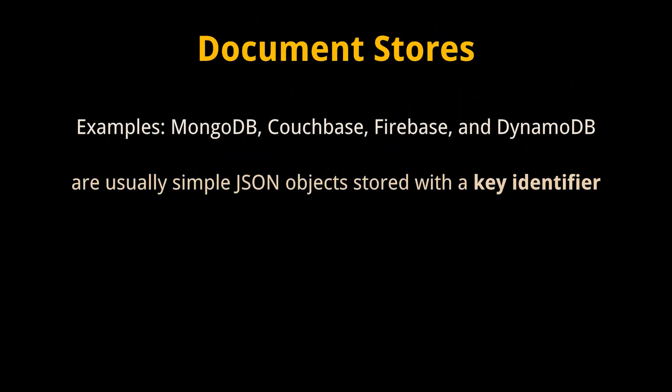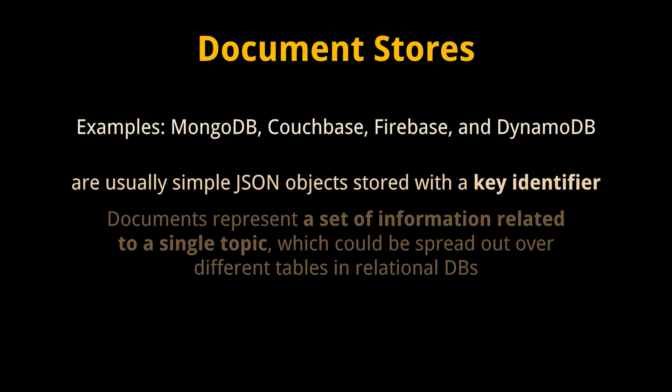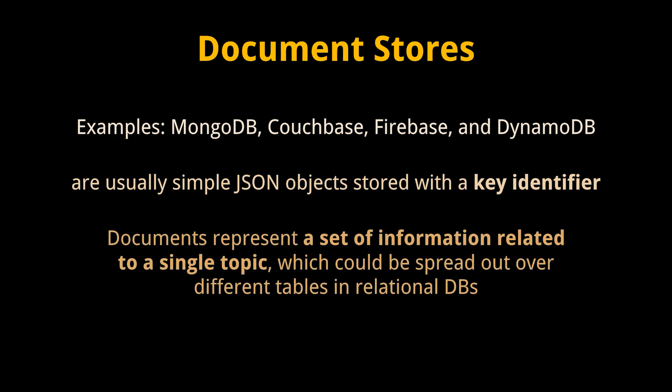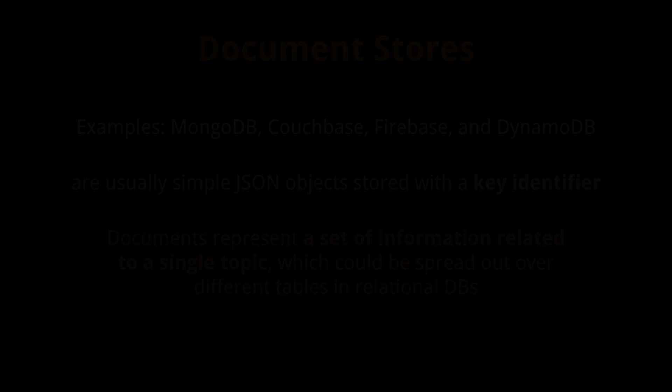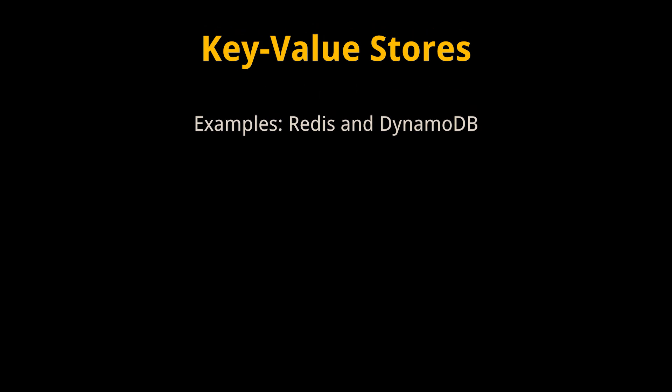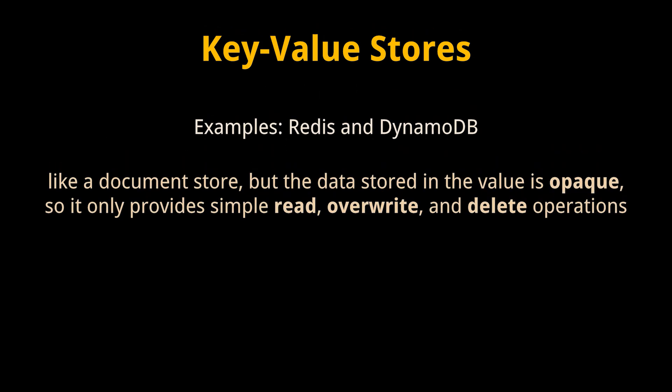Document stores are usually simple JSON objects stored with a key identifier. Documents represent a set of information related to a single topic, which could be spread across different tables in relational databases. For example, a document store might archive all records related to a single customer so that only one document needs to be accessed at a time. Key-value stores such as Redis and DynamoDB are like document stores, but the data stored in the value is opaque.